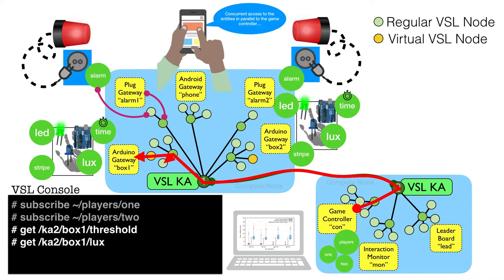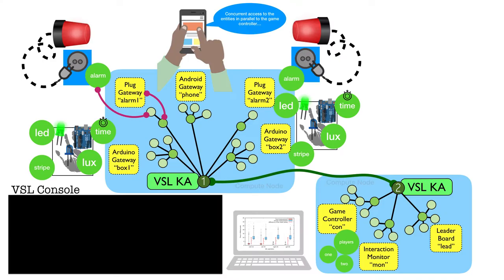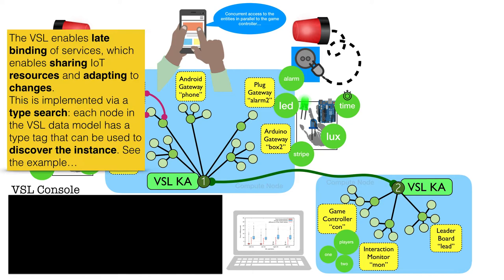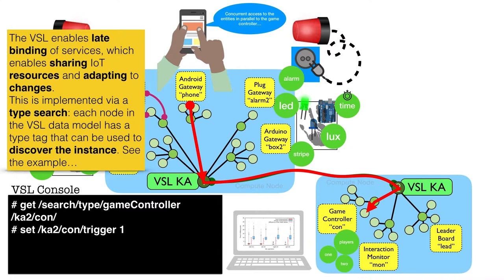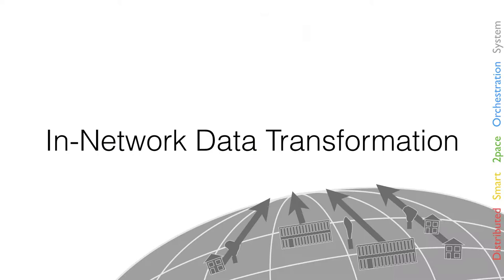Data discovery enables late binding — instead of directly accessing a target address, you first do a lookup using the data type tags. For example, here is such a tag, and as a return you get all instances implementing that data model, which you can then access. This enables you to change the topology and still use all services. It also allows services to access things that did not exist when the service was first started — when someone introduces additional light switches, a service searching for all light switches will automatically find them.